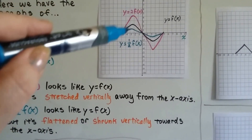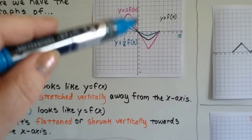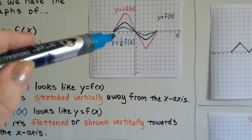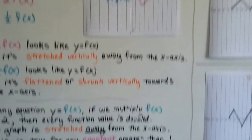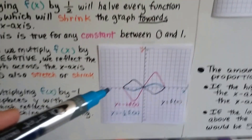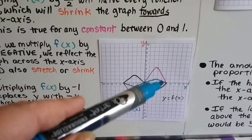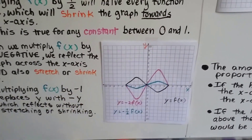This first parabola went up for the pink one. And then when we did it negative, it went down, and then it went up.